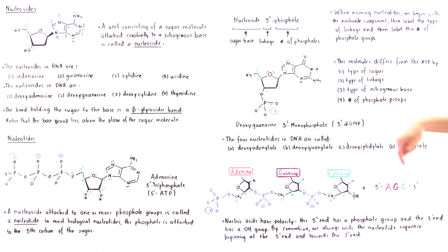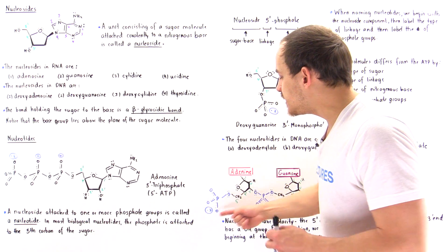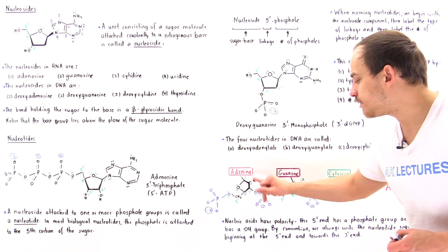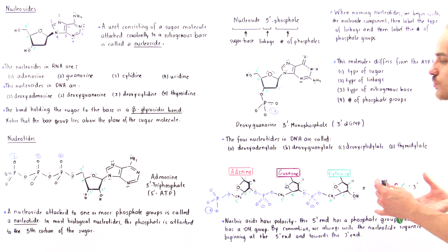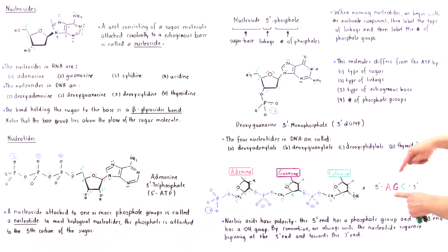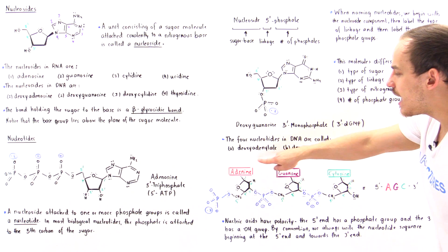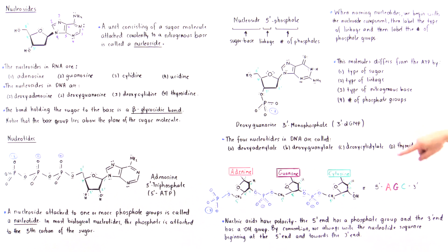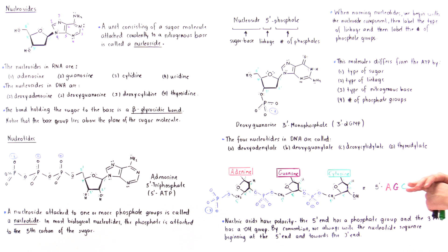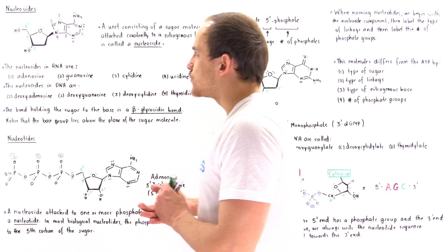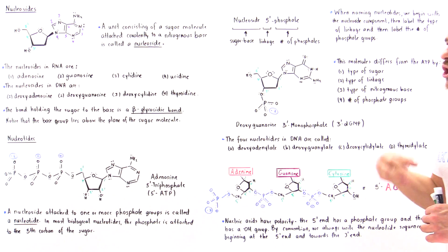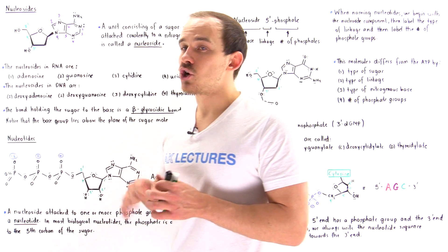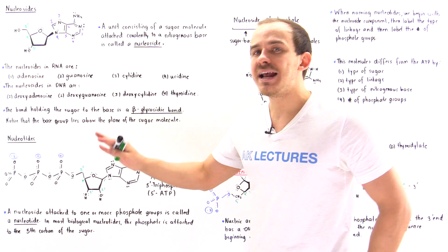Nucleic acids have polarity — we have the beginning, the five-prime end, and the end, the three-prime end. The five-prime end always contains at least one of these phosphate groups attached onto carbon number five. Instead of drawing out this entire nucleic acid every single time, we use a shortcut: starting from the five-prime end, we simply write the type of base — adenine as A, guanine as G, cytosine as C. This is the major difference between nucleosides and nucleotides: nucleotides incorporate the phosphate groups, but nucleosides are basically the sugar molecule attached to our base minus those phosphate groups.